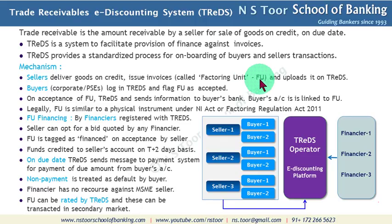This system has particularly been created to help micro, small and medium enterprises in India. It is similar to the factoring arrangement but is an extended version of factoring. In case of factoring, there is only one financer, whereas in the case of the TReDS system, it is not only an electronic system but also has a much greater number of financiers.